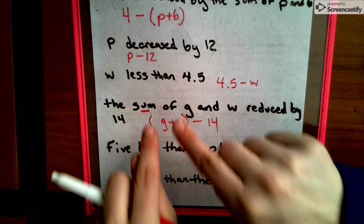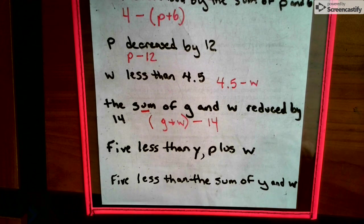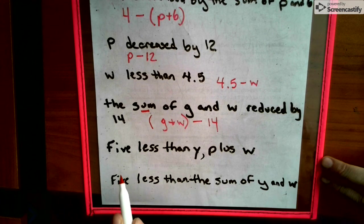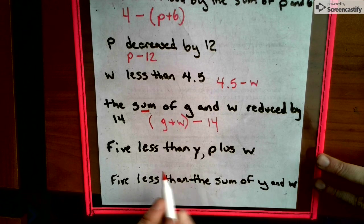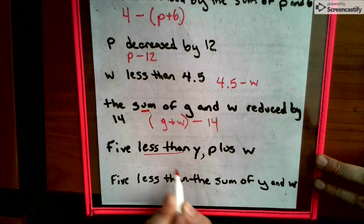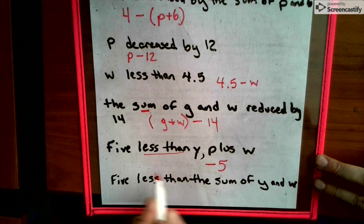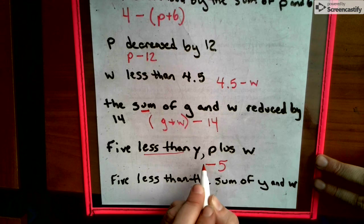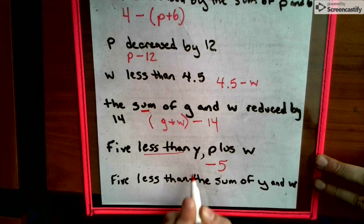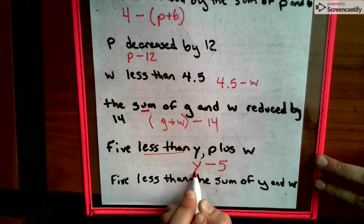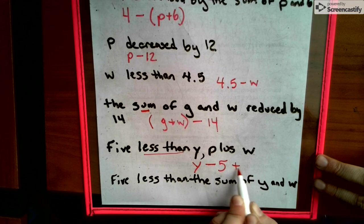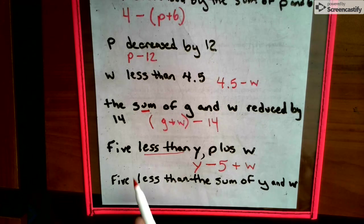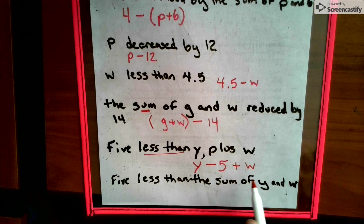So we have to have the sum of that before we can take 14 from it. So 5 less than Y plus W. Here's that less than again, so that minus 5 is coming at the end: Y plus W minus 5.